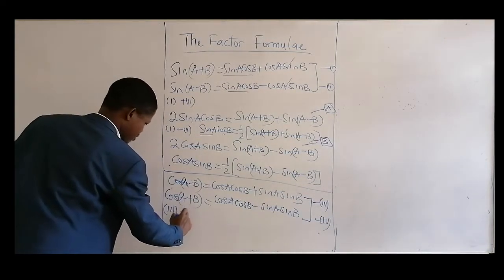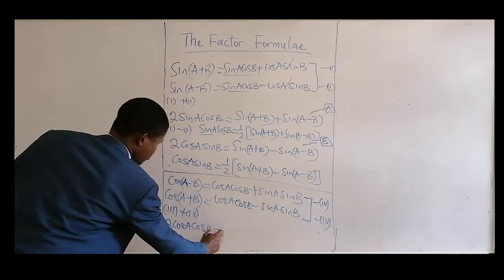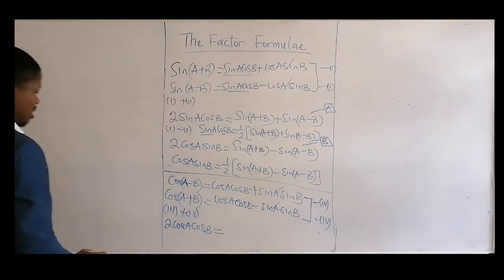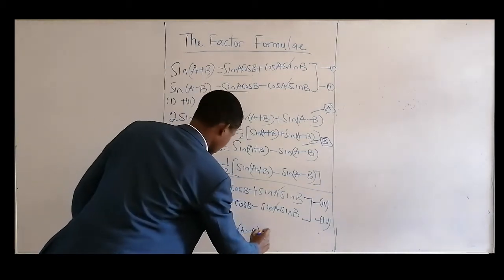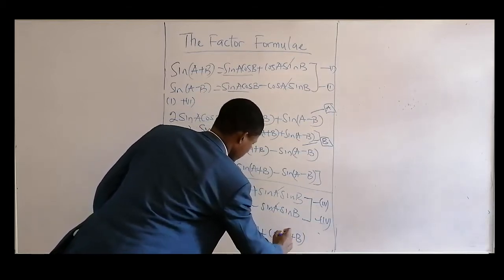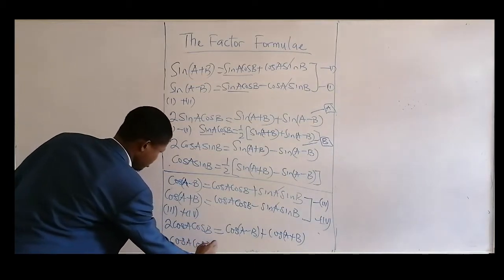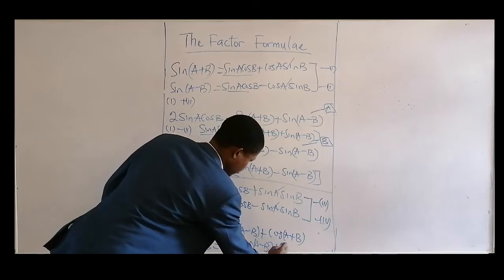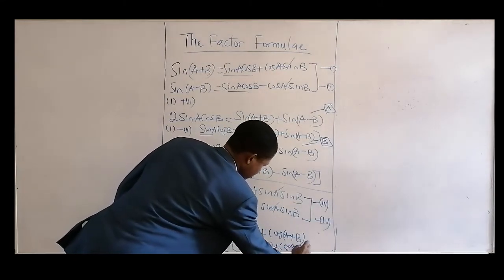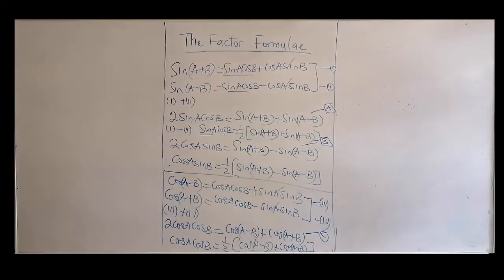Can we add equations three and four together? If we add them, we get 2 cos A cos B equals cos(A − B) plus cos(A + B). Divide by two and we have: cos A cos B equals one half of cos(A − B) plus cos(A + B). Call this equation C.